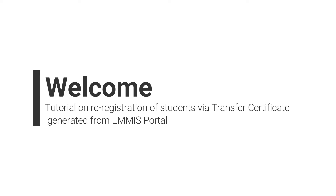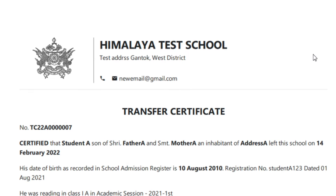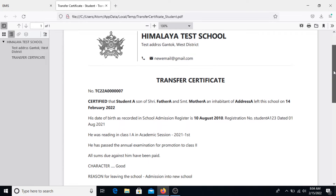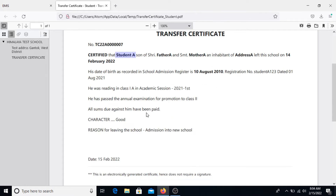Welcome to today's tutorial on re-registration of students via transfer certificate generated from EMIS portal. To initiate the readmission via transfer certificate, students are required to submit the transfer certificates generated from the EMIS portal to the new school. The transfer number plays a vital role for registering any new students in the same district, as seen in the transfer certificate format displayed on the screen.